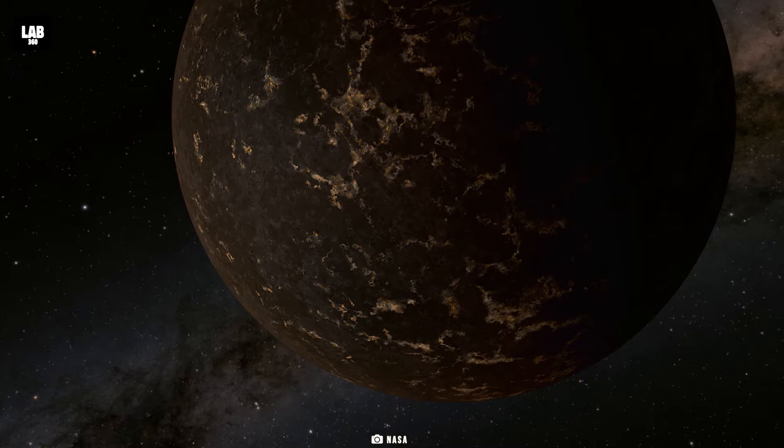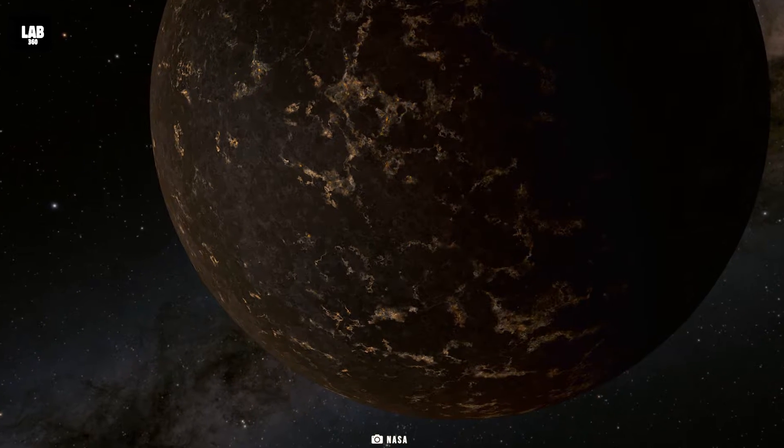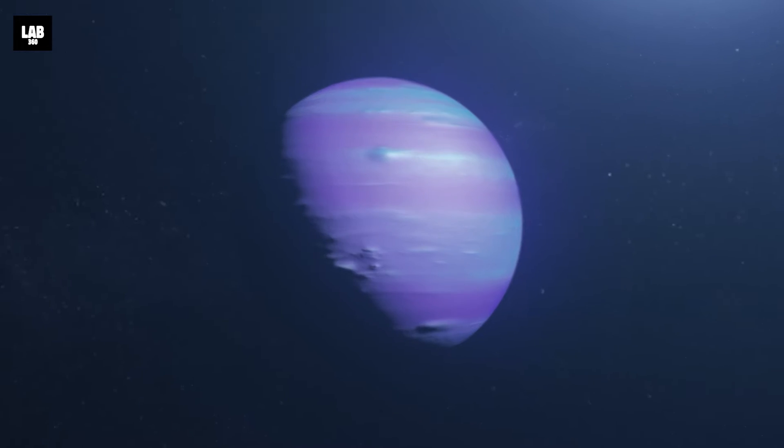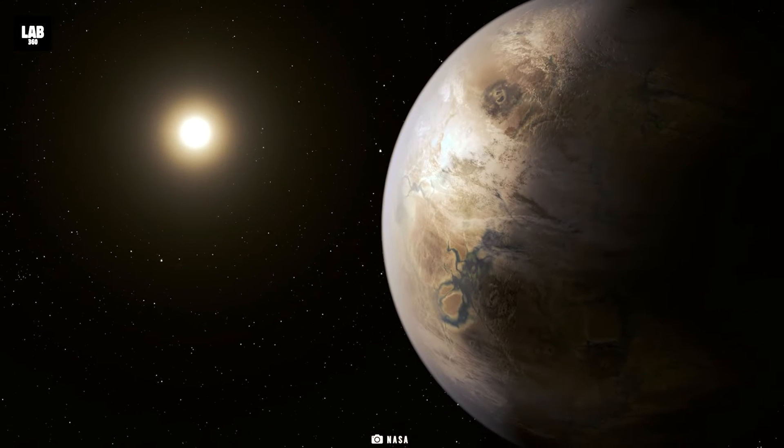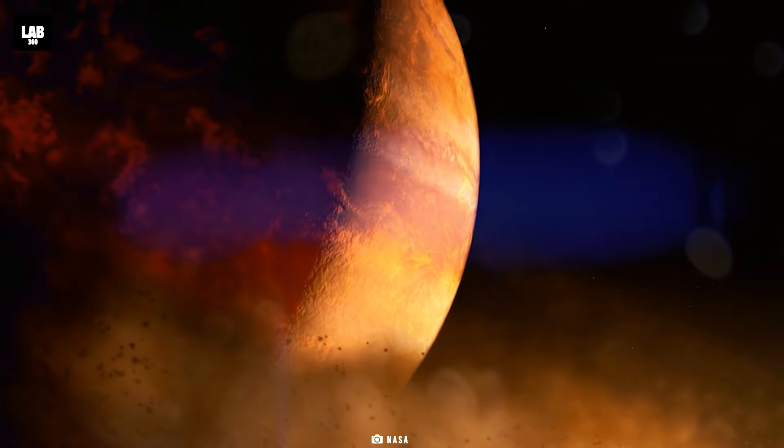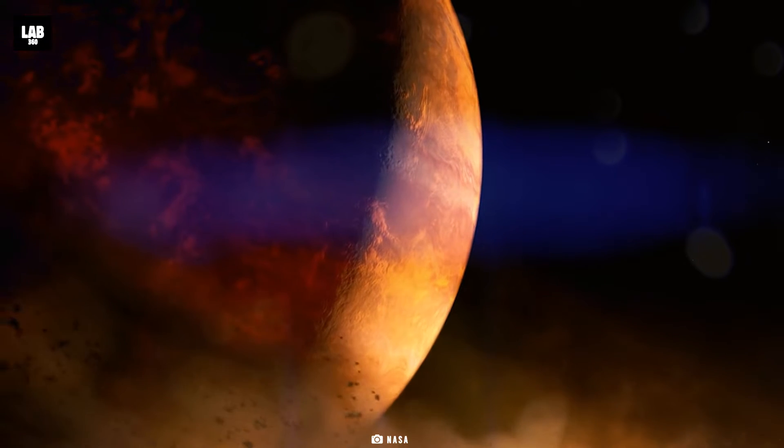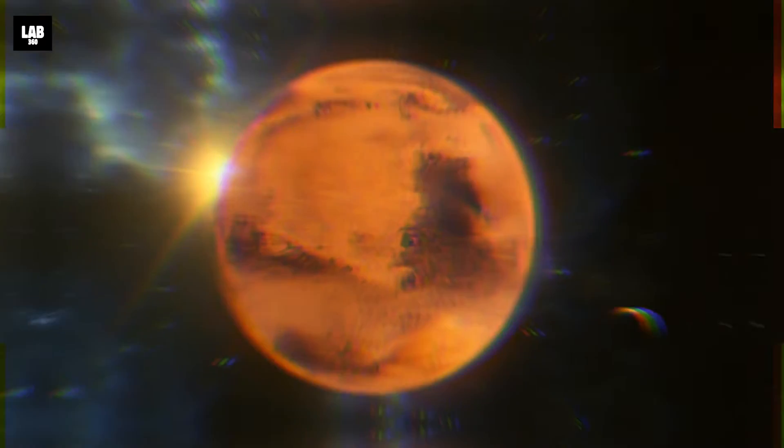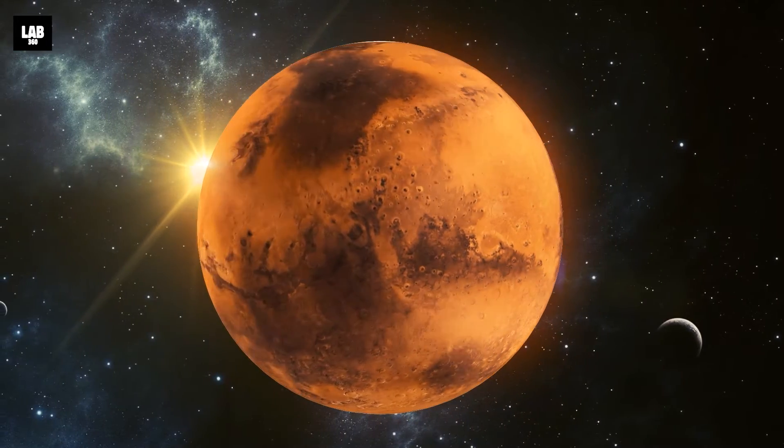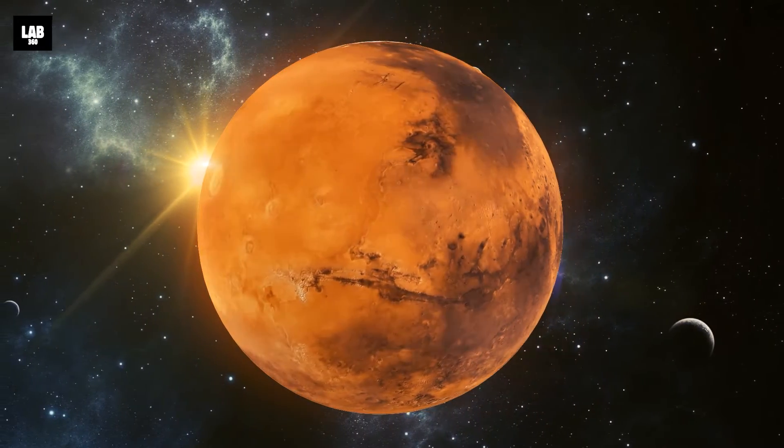The mini-Neptunes and super-Earths are the most common type of exoplanets. They can either be huge rocky planets or gas planets smaller than Neptune. Then there are exoplanets called ocean worlds with a rocky core and are entirely covered by a vast liquid ocean running hundreds of kilometers deep.